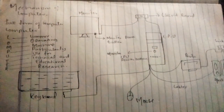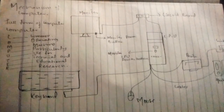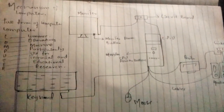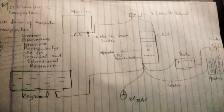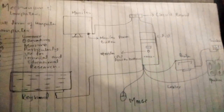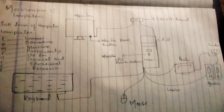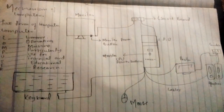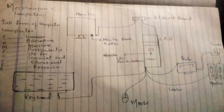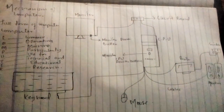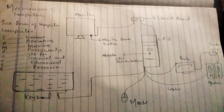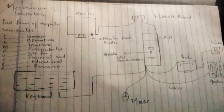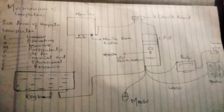Bismillahirrahim. First of all, I want to thank my old friends and viewers for supporting us and giving their precious time to us. In this tutorial, we will learn the mechanism of the computer — the working of the computer — how different cables are connected to each other. For example, we can take the example of the mouse, keyboard, and all the parts of the computer that are connected to each other and how they work.